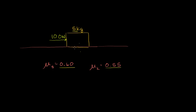First, consider if there were no friction — a completely frictionless boundary with no air resistance. In the horizontal dimension, there would only be one force: 100 newtons, completely unbalanced. That would be the net force. Force equals mass times acceleration, and both are vector quantities. So 100 newtons divided by 5 kilograms gives 20 meters per second squared of acceleration in the rightward direction. But that's if there were no friction.